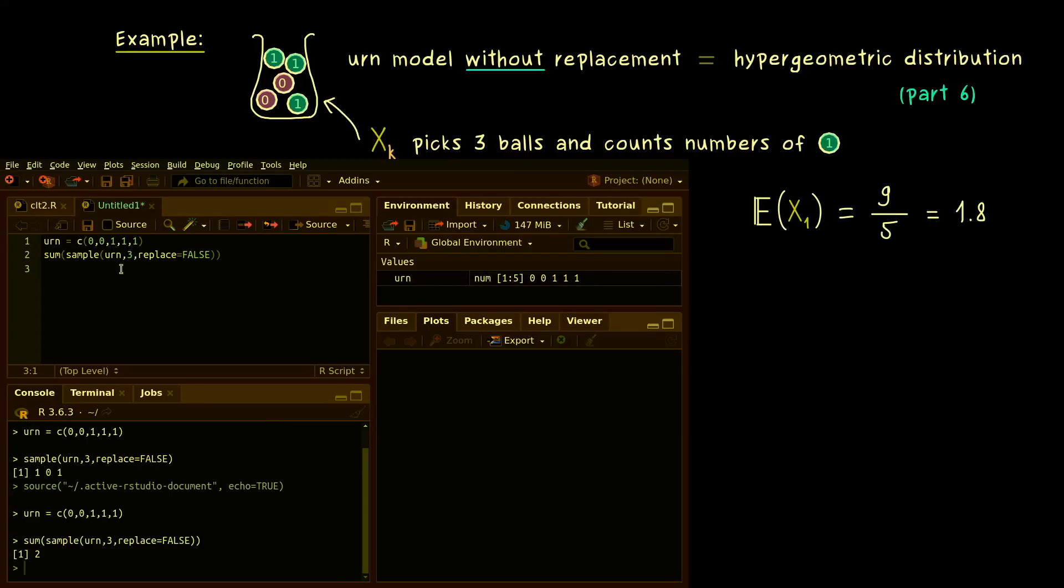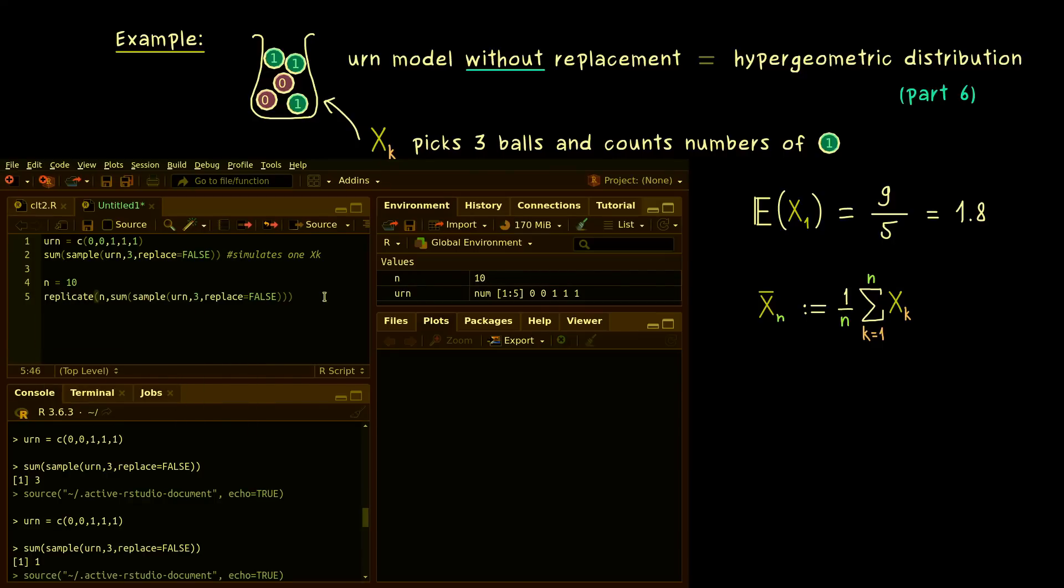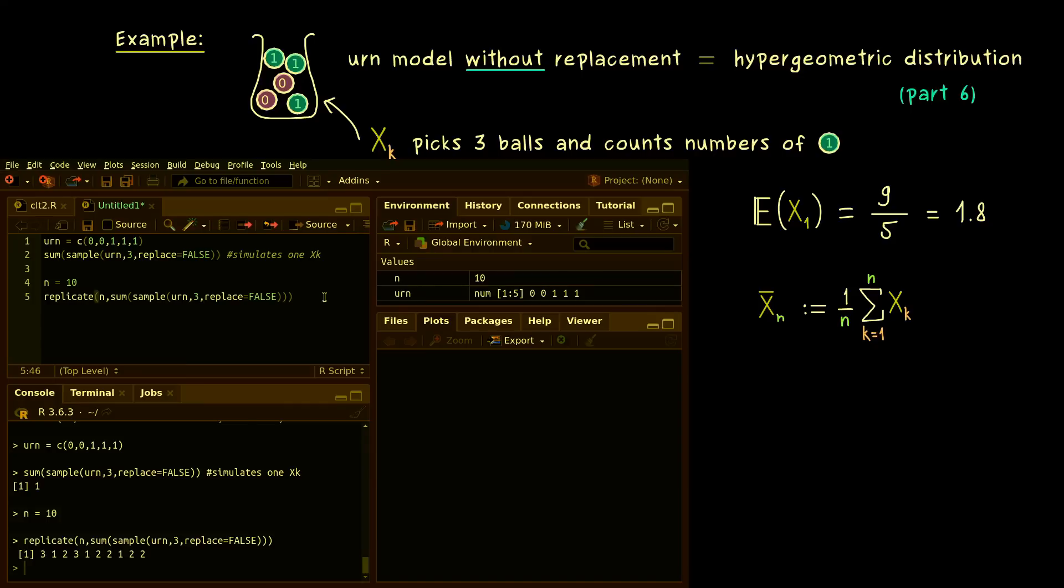This means, we can just use the sum command here to add up all the balls. Hence, by running the script, you see we get different samples, 1, 2, 1, 1, 1 or 3 even. In other words, this just simulates one random variable xk. But now you know, actually we want to do the whole thing n times, sum it up and divide by n. So let's introduce a number n. Maybe we start with 10. And then we replicate the whole thing from before.